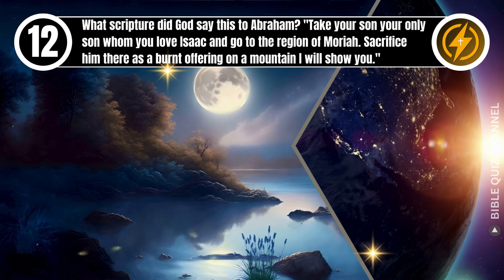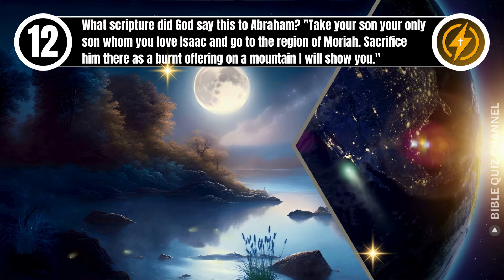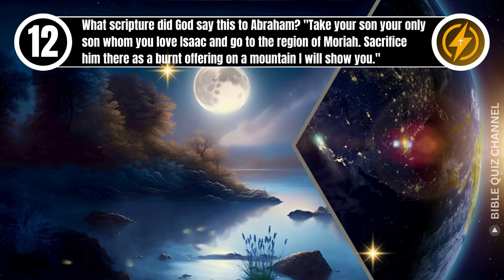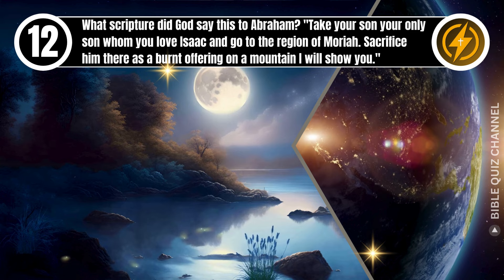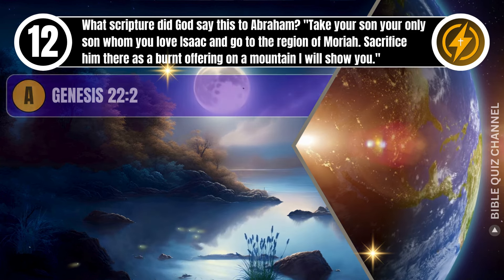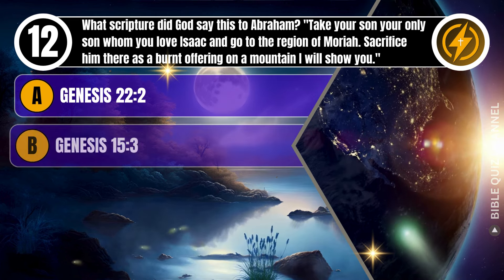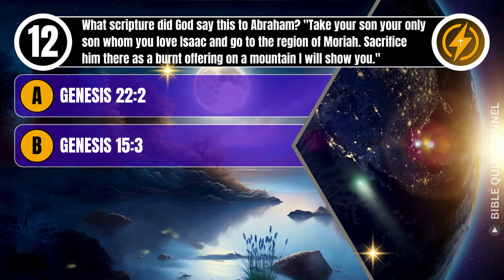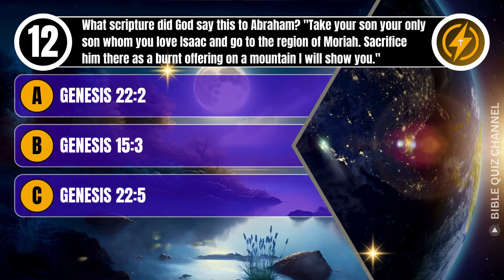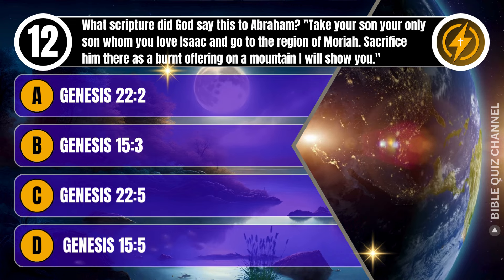Question 12. What scripture did God say this to Abraham? 'Take your son, your only son whom you love, Isaac, and go to the region of Moriah. Sacrifice him there as a burnt offering on a mountain I will show you.' A. Genesis, chapter 22, verse 2. B. Genesis, chapter 15, verse 3. C. Genesis, chapter 22, verse 5. D. Genesis, chapter 15, verse 5. You get 10 seconds.